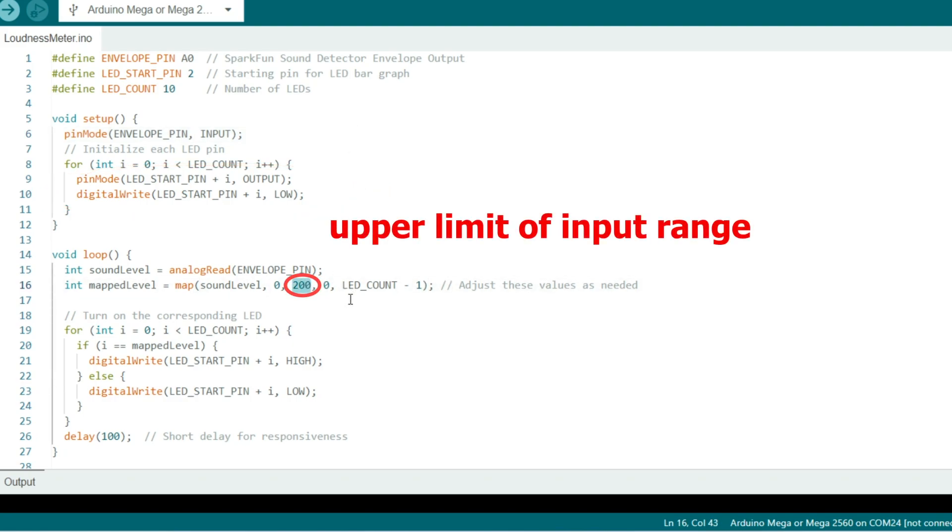You'll see in the loop function it reads the sound level from the envelope pin and maps that sound level to an index for the LED array of 0-9 for 10 LEDs and it lights up the LED corresponding to the sound level while turning off all the other LEDs. And remember you can adjust the map values in line 16 to fit your own project.